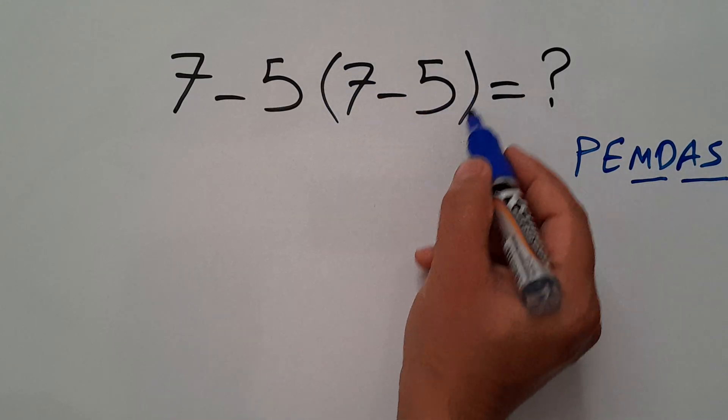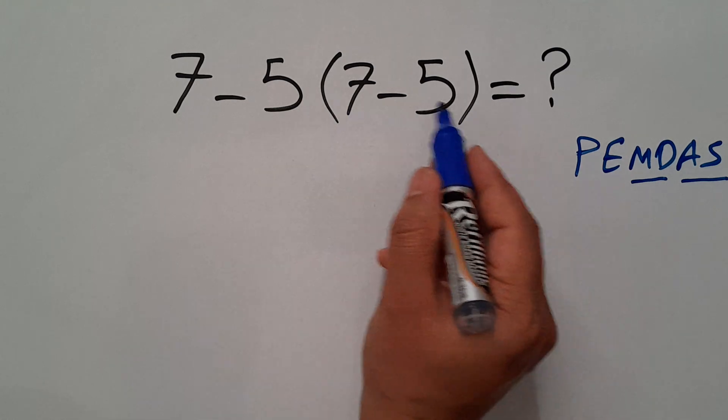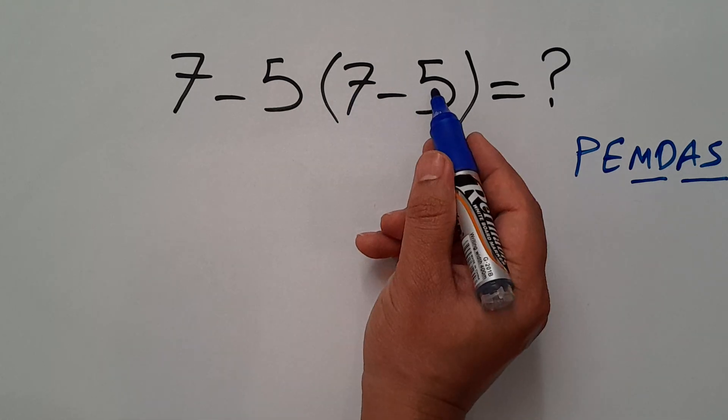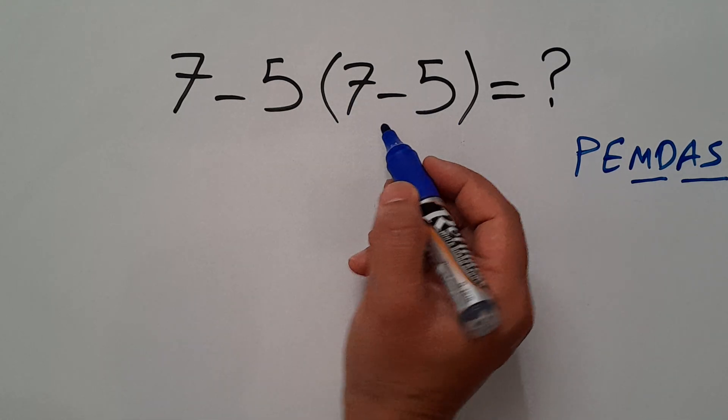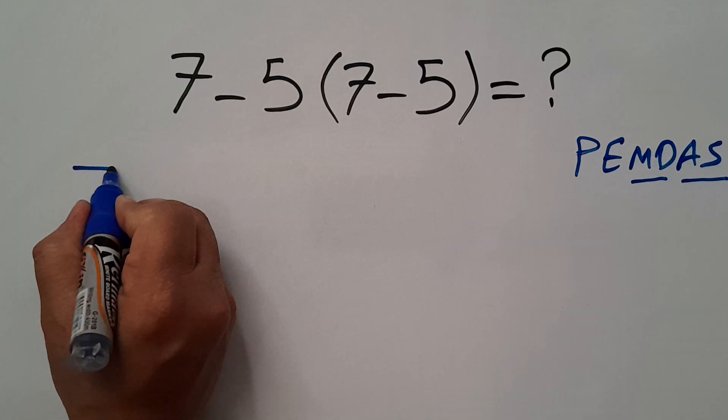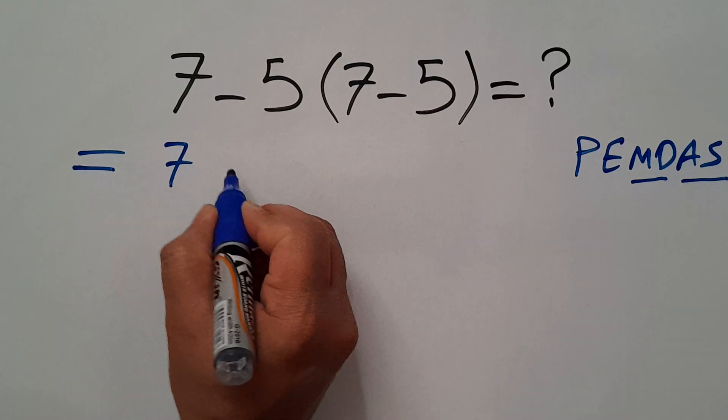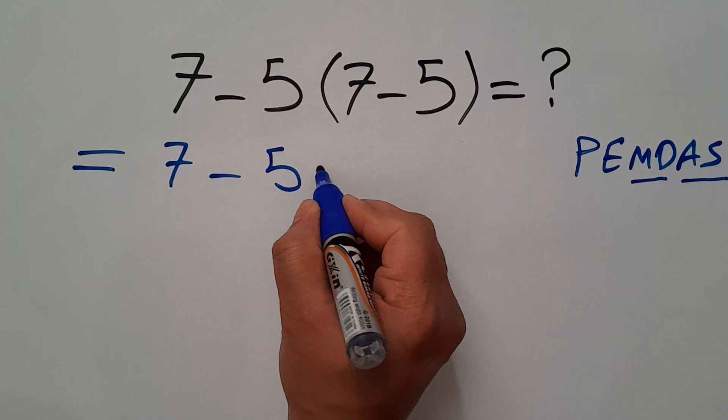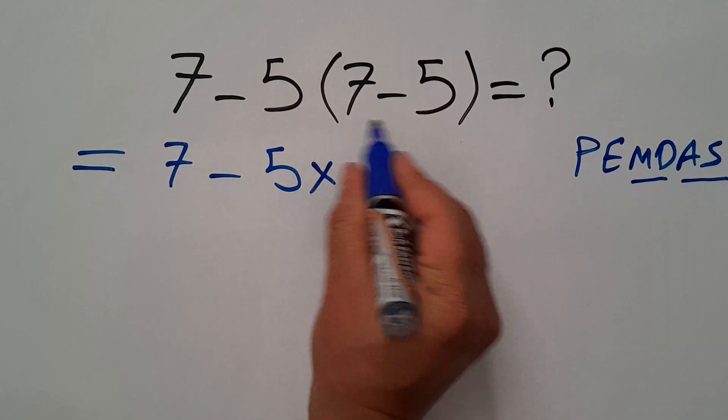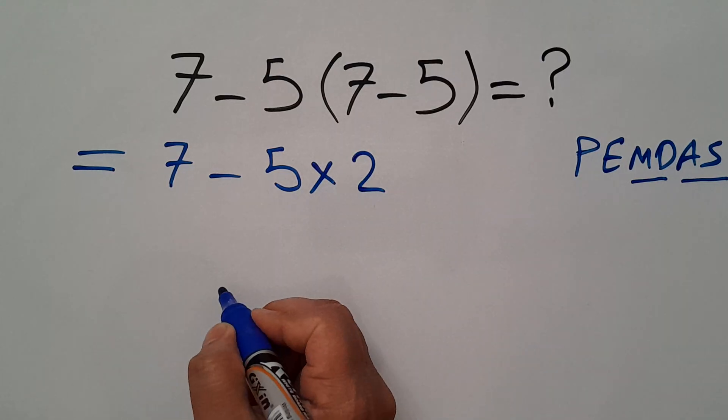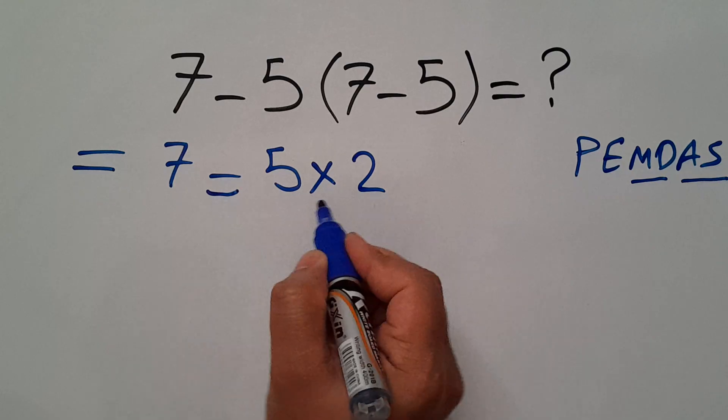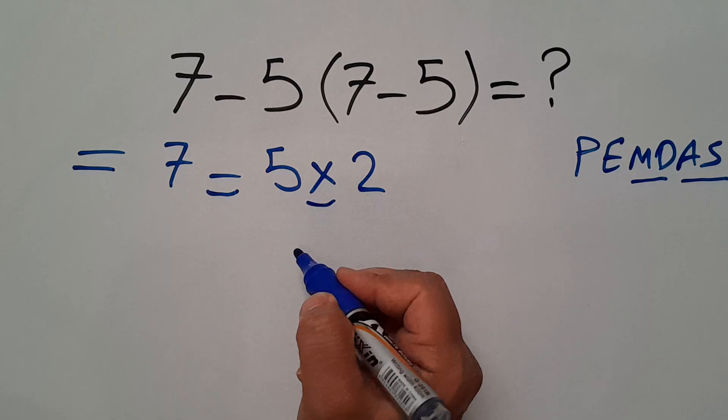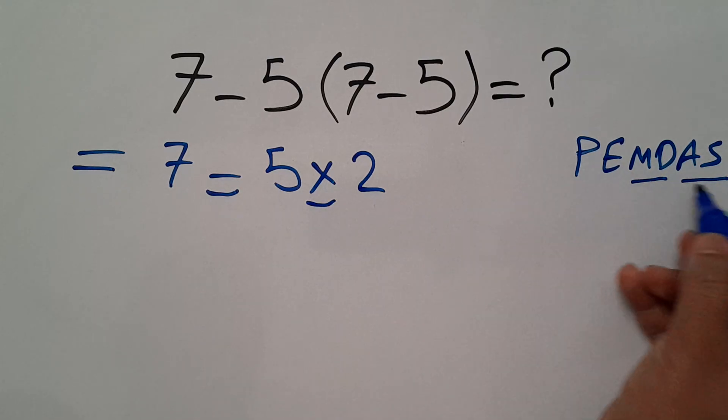Here we have these parentheses, and inside these parentheses we have 7 minus 5 which equals 2, so our expression equals 7 minus 5 times just 2. Now we have one subtraction and one multiplication. According to the PEMDAS...